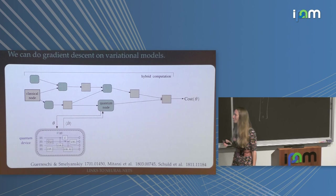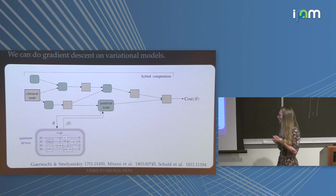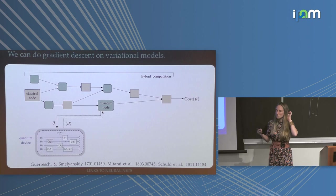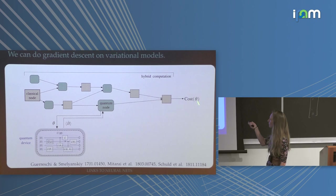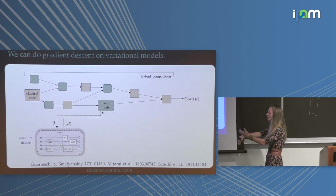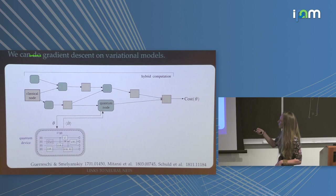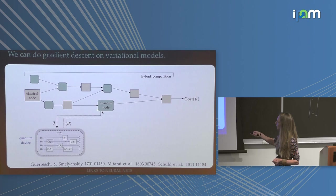One of the neater results of quantum machine learning from the last year or so is about training these models. This is also a link to neural networks — we train them with stochastic gradient descent. The setup: if you have a hybrid computation, say a neural network where one layer is replaced by a variational quantum circuit, and in the end there's a cost function. If you want to do automatic differentiation through this, you have to define a gradient of the quantum node. Think of quantum nodes as just sending some parameters to a circuit, executing it, and sending back a deterministic expectation value — just a black box function.